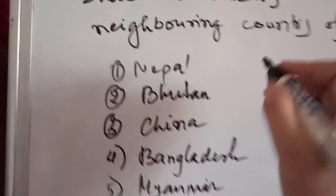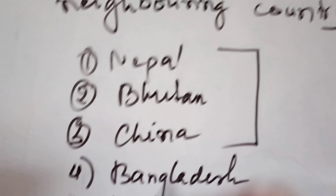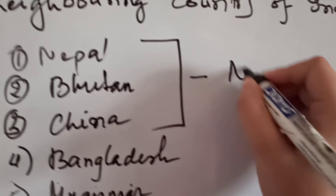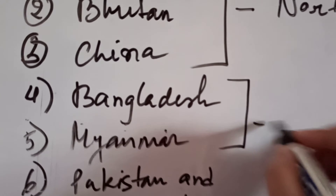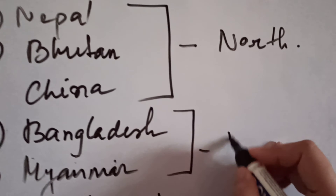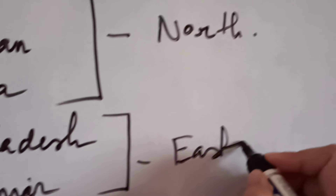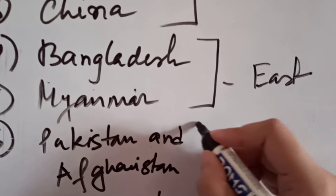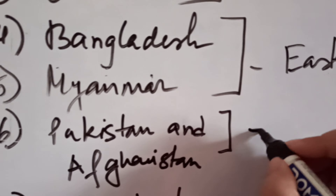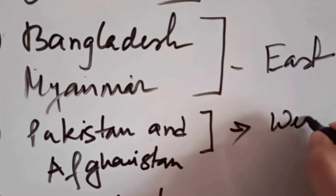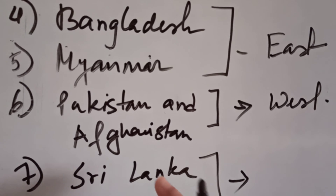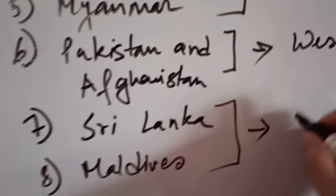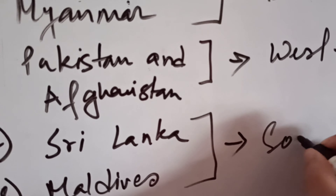Based on their location: Nepal, Bhutan, and China are located in the northern section of the country. Bangladesh and Myanmar share their boundary with India in the eastern portion. Pakistan and Afghanistan share their boundary with India in the western portion. Sri Lanka and Maldives share their boundary with India in the southern section.